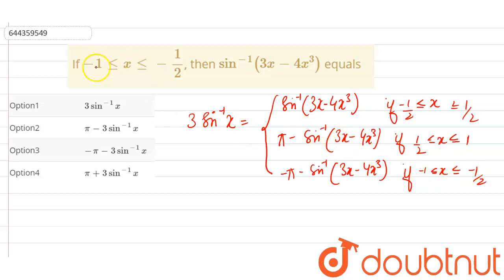So here it is given that x is between minus 1 to minus 1 by 2, which is given in this. Right, so in that case guys our